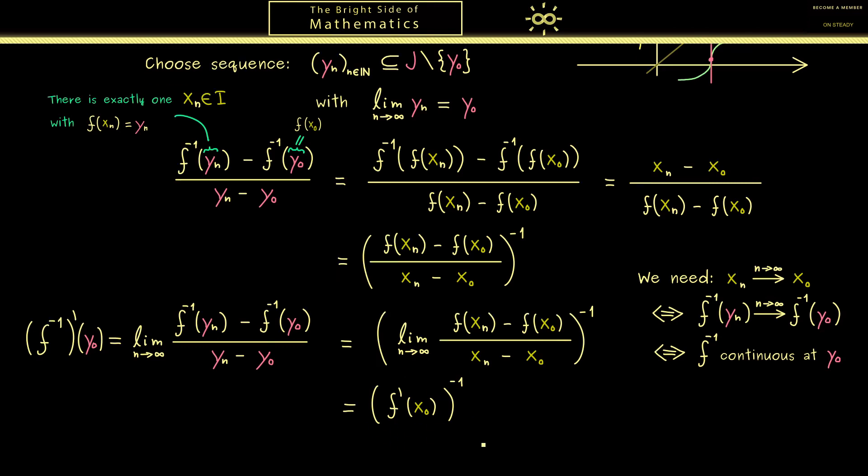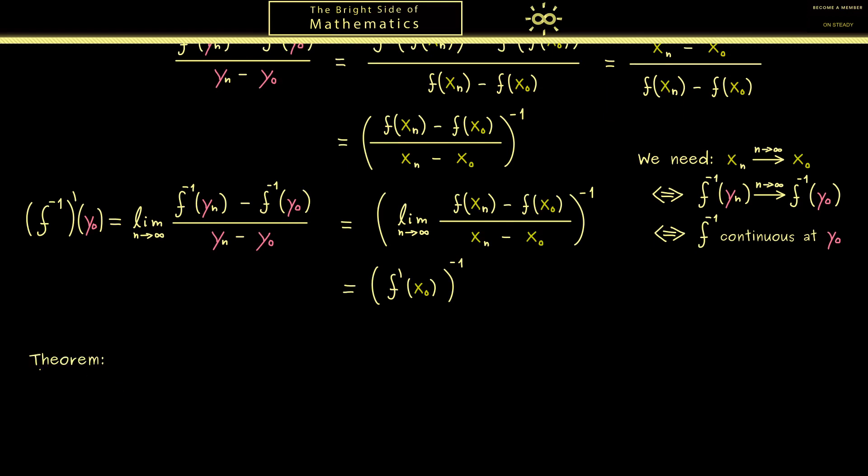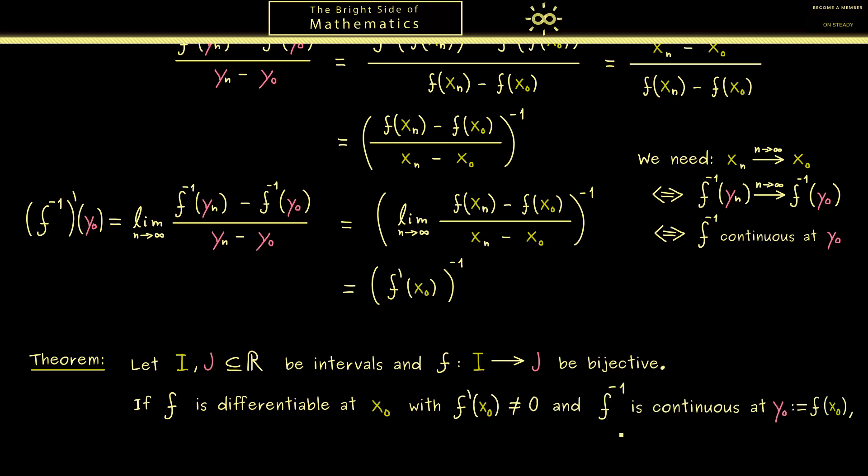Then I would say let's put everything we know now into a nice theorem. So now we know all the assumptions we need and also the outcome. Therefore let's take intervals again and also a bijective function f. Now in the case that this function is differentiable at a point x0 with non-vanishing slope, and that the inverse function of f is continuous at the point f of x0 we call y0, then the inverse function is differentiable at this point y0.